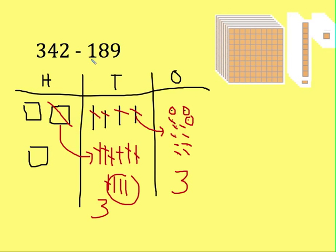Now I'm just left with my hundreds. I have one hundred that I want to take away. I see I have two to choose from so it's no big deal. I just cross one off. I'm left with one left. In the end I end up with one hundred, three tens and three ones which is one hundred thirty three.